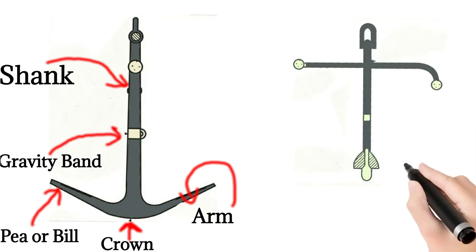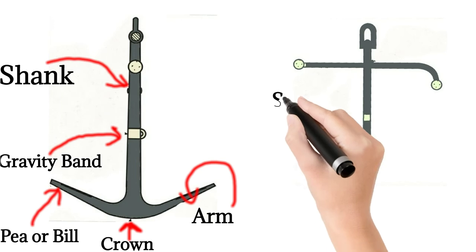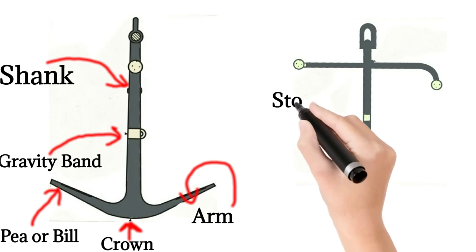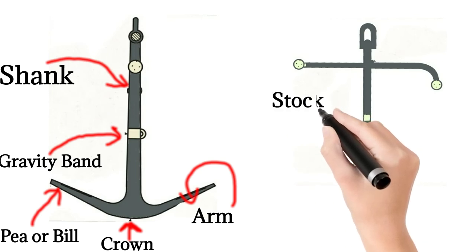Fifth is Arm. Parts which extend from each side of the crown, just like hands, is known as arm of the anchor.